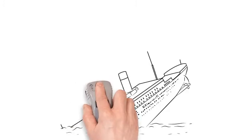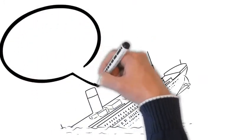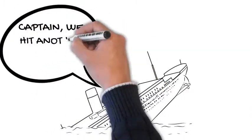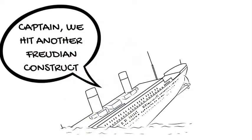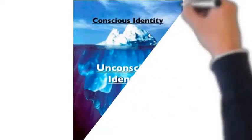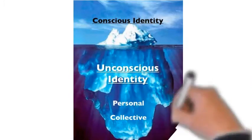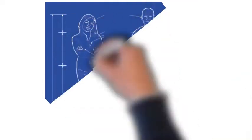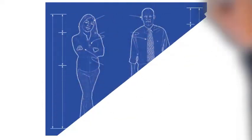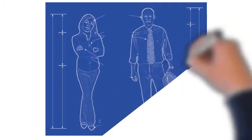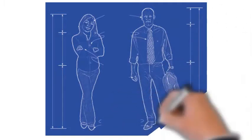In Jung's model we have the conscious mind which we're aware of, the personal unconscious mind which is the parts of ourselves that we're unaware of, and the collective unconscious mind. And this collective unconscious mind houses the blueprint for all of the possibilities a person might become.